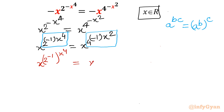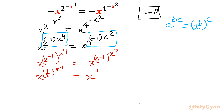Similarly, I am writing x^4 raised to the power of negative 1, and then from the second tier. Now 2^(-1) is one-half, so I will write (1/2)^(x^4) and then (x^(1/4))^(x^2).